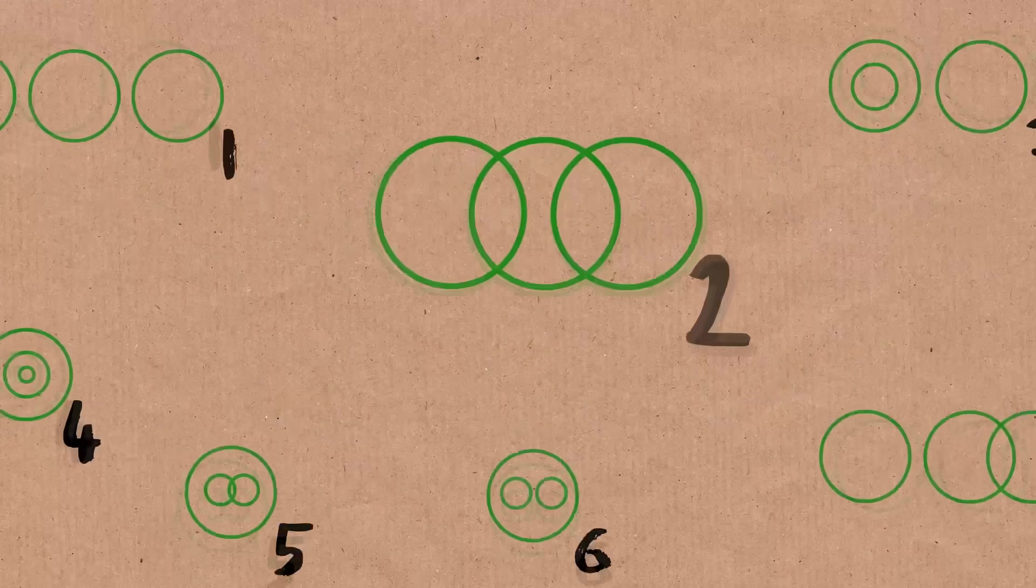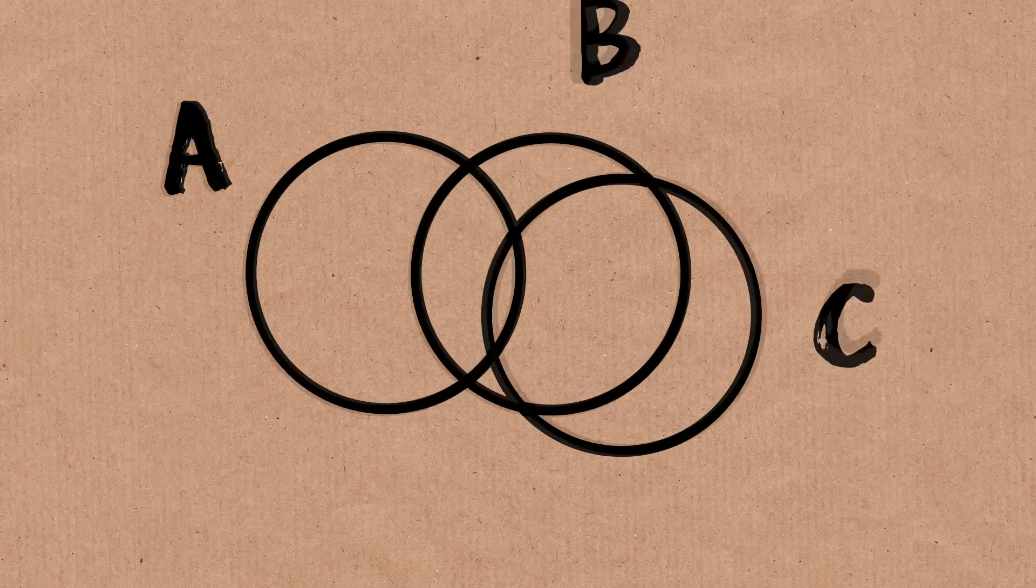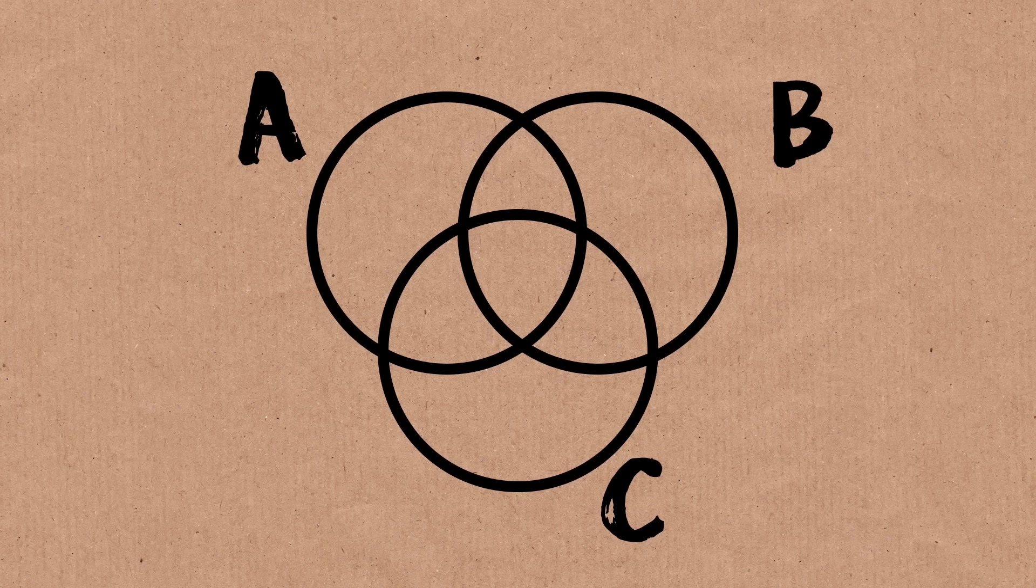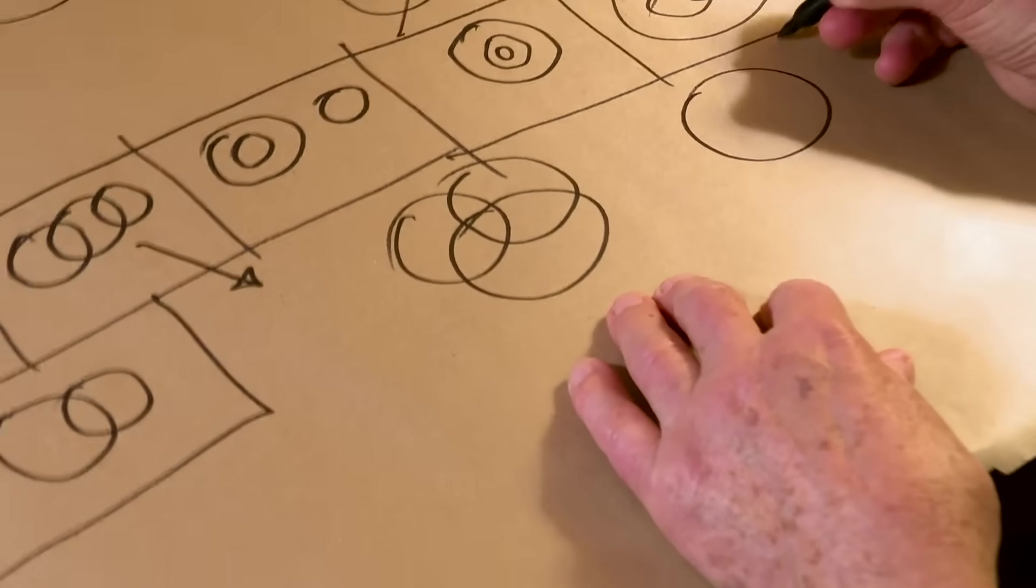This one here can be modified a bit. A meets B meets C. C could meet A, and we would get something that looks like this. And we get a Venn diagram. A, B and C, and they intersect in all possible ways.